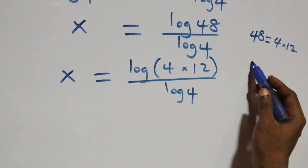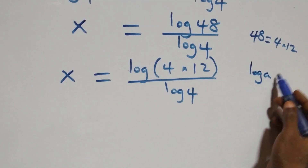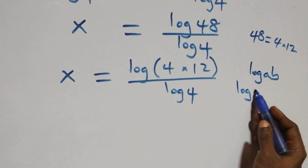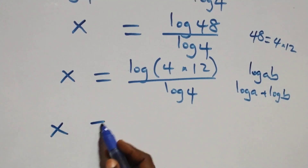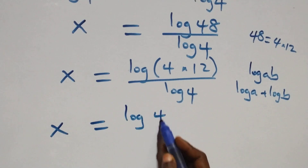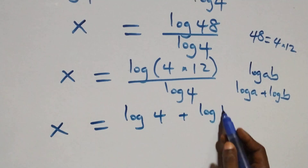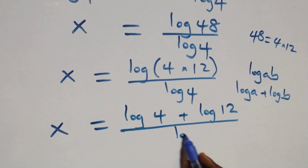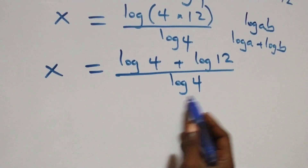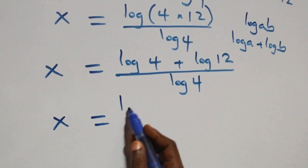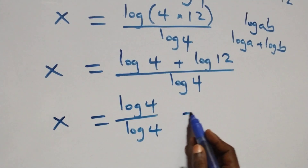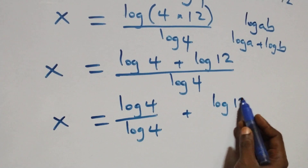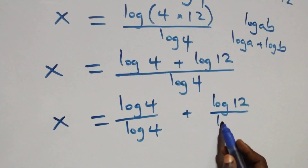This follows from the law of logarithm. When we have log a times b, this can be expressed as log a plus log b. That is, what we have here becomes x equals to log 4 plus log 12 over log 4, which we then write as log 4 over log 4 plus log 12 over log 4.